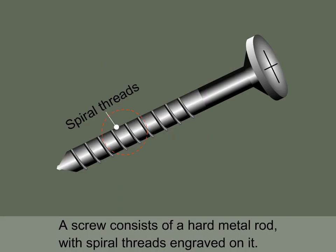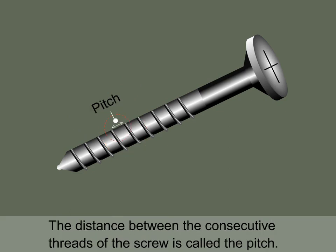A screw consists of a hard metal rod with spiral threads engraved on it. The distance between the consecutive threads of the screw is called the pitch. Displayed here are a few examples of screw.